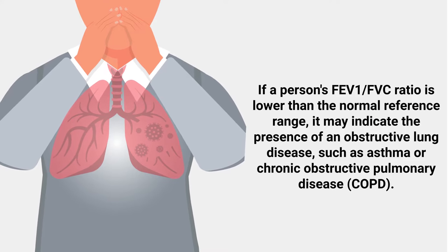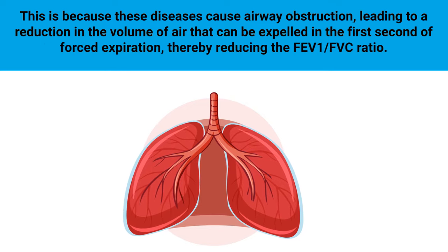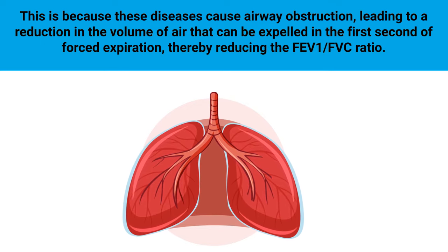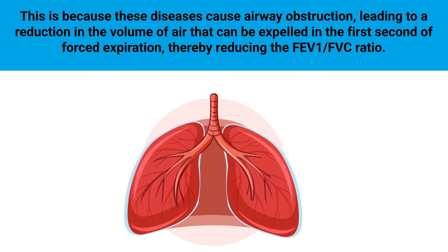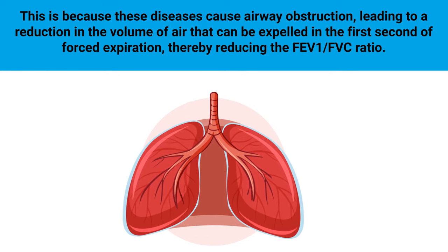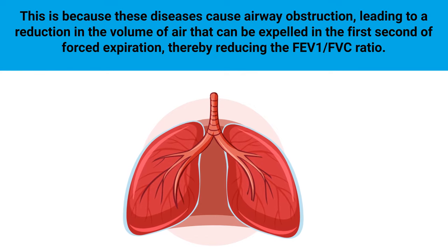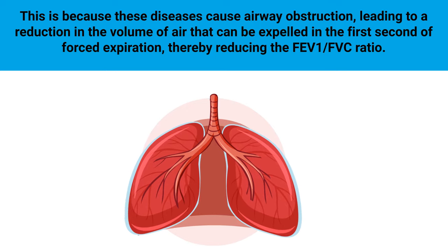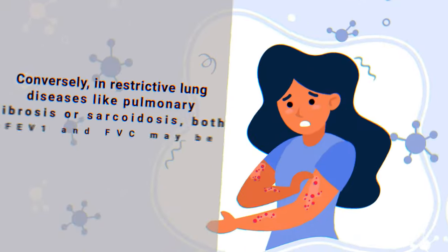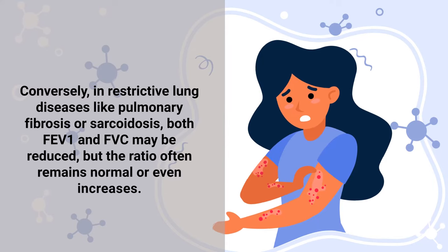Obstructive lung diseases such as asthma or COPD cause airway obstruction, leading to a reduction in the volume of air that can be expelled in the first second of forced expiration, thereby reducing the FEV1 to FVC ratio.